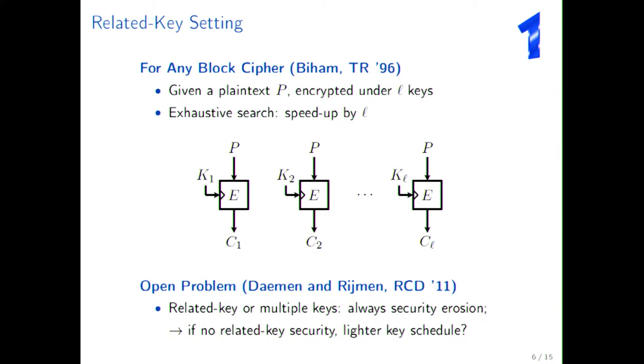So, in this case, Daemen and Rijmen also published this in a paper at Romanian Crypto Day. So, this is the write-up of this talk in response to the related key attacks on AES. And they formulated there what I thought was a very interesting open problem. So, basically, Daemen and Rijmen say, if you're looking at a setting where you have related keys or even multiple keys, this is always going to lead to an erosion in security. So, basically, if you do not require security against related keys is their question, could you have a block cipher with a lighter key schedule? This is what we will answer in this talk.